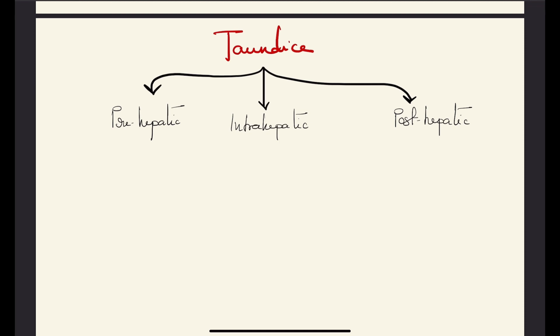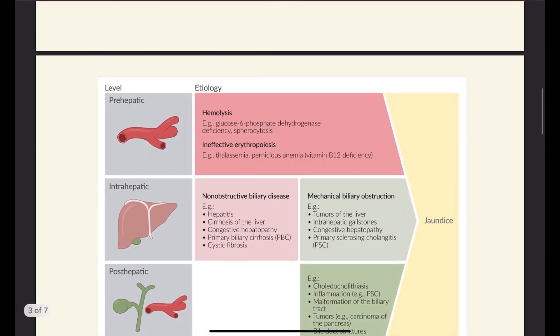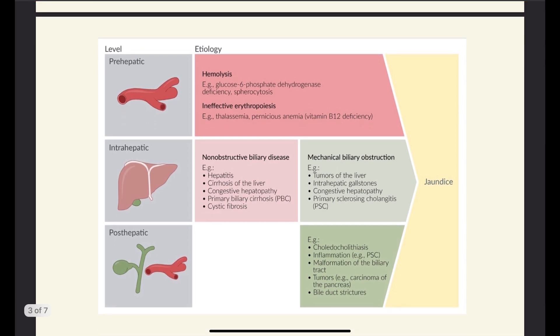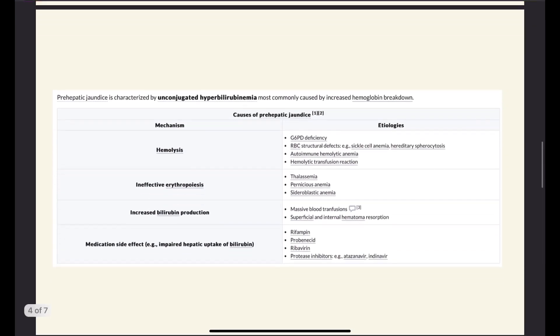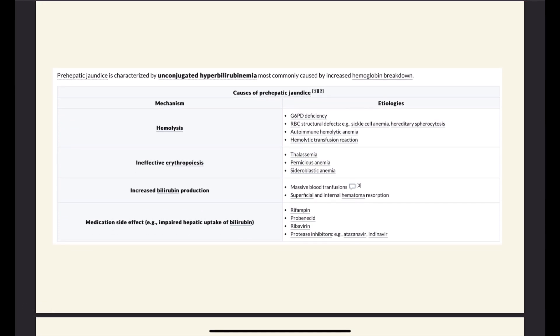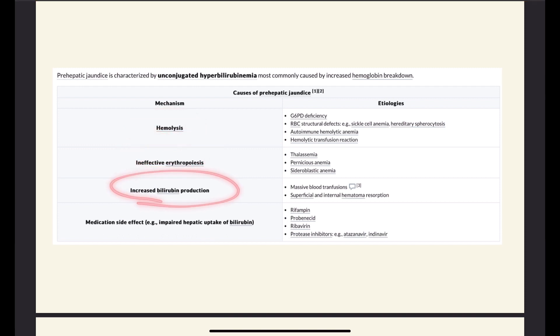Let's start with the prehepatic and move into intrahepatic and posthepatic, and then discuss the different changes in lab values so we can better differentiate between them. When we talk about prehepatic causes, they are mostly due to hemolysis or ineffective erythropoiesis. Mainly, prehepatic jaundice — because it hasn't reached the liver yet — results in unconjugated hyperbilirubinemia.